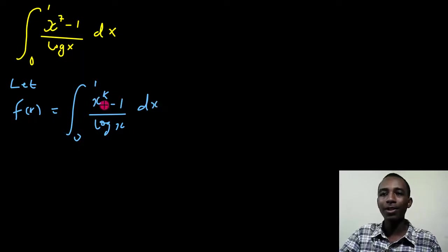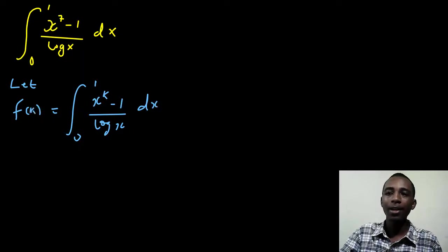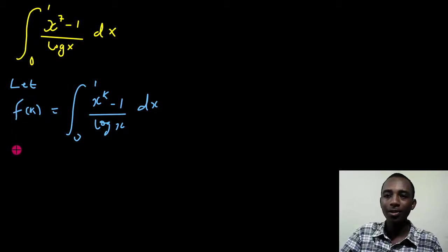right? So I'm letting the number k here. Now let's take derivatives on both sides. So basically, I'm going to have the derivative of this function of k with respect to k.